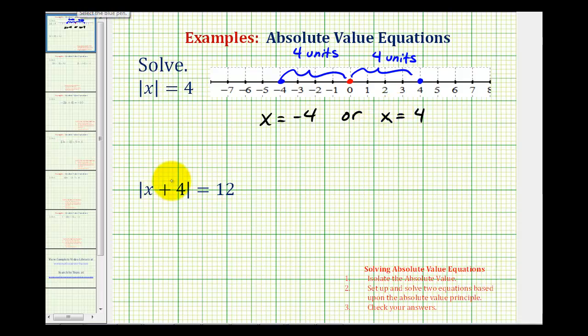Looking at our second example where we have the absolute value of x plus 4 is equal to 12, if we think about the numbers that have an absolute value of 12, we know that positive 12 has an absolute value of 12. But the absolute value of negative 12 is also equal to 12.